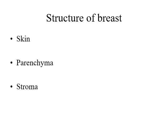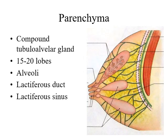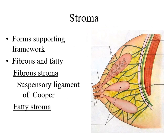The structure of the mammary gland consists of skin, parenchyma, and stroma. The parenchyma forms the ducts and alveoli, while the stroma forms the fibrous septa and fat.